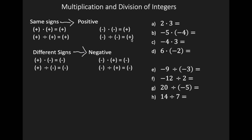Now what happens when you have different signs? When you have different signs, your result is negative. So if you're multiplying a positive times a negative, your result is negative. If you're multiplying a negative times a positive, your result is negative — it does not matter who is bigger. If you're dividing a positive by a negative, your result is negative, and a negative divided by a positive will also give you a negative.